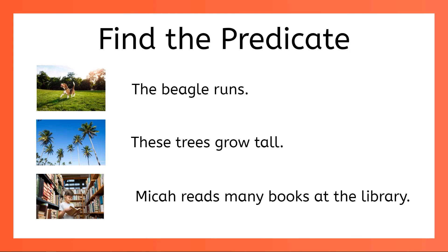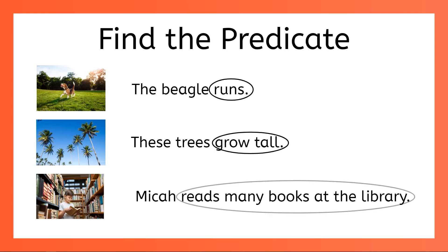In the sentence, the children play outside, the predicate is play outside. The predicate is telling us what the children are doing. Sometimes the predicate contains only a verb, like in the sentence the beagle runs. Sometimes the predicate contains the verb and another word, like these trees grow tall. Sometimes the predicate contains even more words, like in the sentence Micah reads many books at the library. That predicate contains six words.